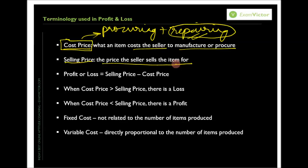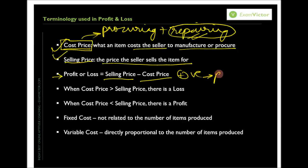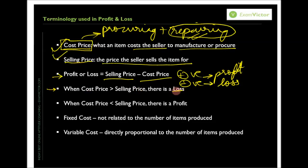Selling price is just the price that you sell the item for — no twist there. Once these two are clear, profit or loss is very simple: it is just selling price minus cost price. If selling price minus cost price is positive, it's called profit; if it's negative, it's called loss. Cost price greater than selling price is a loss; cost price less than selling price is a profit.